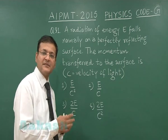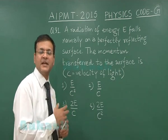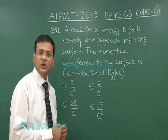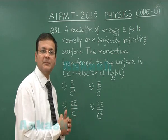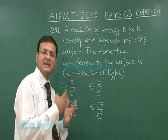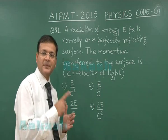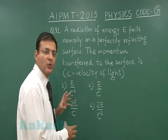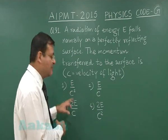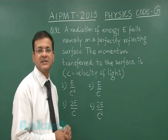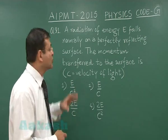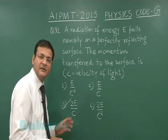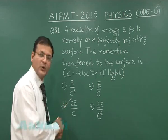Since the surface is reflecting, it will be returning with the same momentum. As in Newton's laws of motion, total momentum transferred is final momentum minus initial momentum. So here P minus (minus P) equals 2P. So twice of momentum, that is 2E/C, will be the correct answer. For question 91, the correct answer is the third option, that is 2E/C.